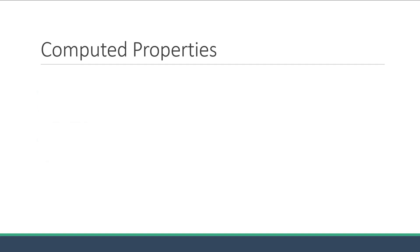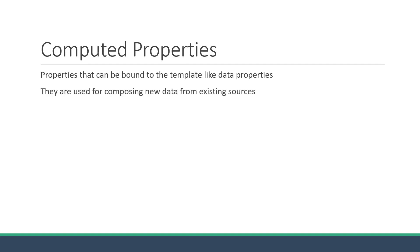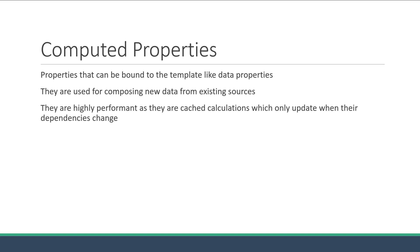What exactly are they? Well, computed properties are properties that can be bound to the template similar to data properties. They are used for composing new data from existing sources. A very important point about them is that they are highly performant as they are basically cached calculations which only update when their dependencies change. Now this description seems more complex than it actually is, so let's head back to VS Code and understand all about computed properties in Vue.